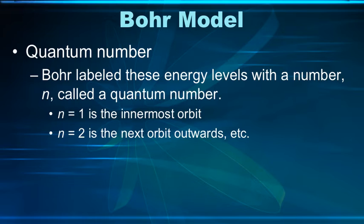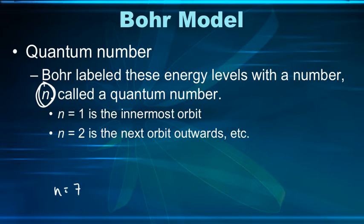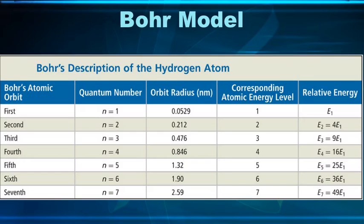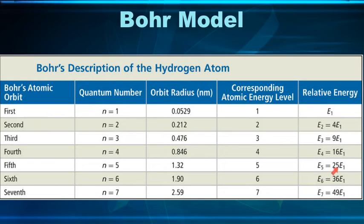Bohr labeled these energy levels with a number he calls n, now called a quantum number. n equals 1 is the innermost orbit, n equals 2 is the next one outward, n equals 3 is further out, and this goes all the way to n equals 7 for what actually exists. There's a chart summarizing each of these energy levels from n equals 1 to n equals 7, showing how far away they are from the nucleus in nanometers — that's 10 to the negative 9th meters — and the corresponding energy levels go up by a squared factor as you move outward.